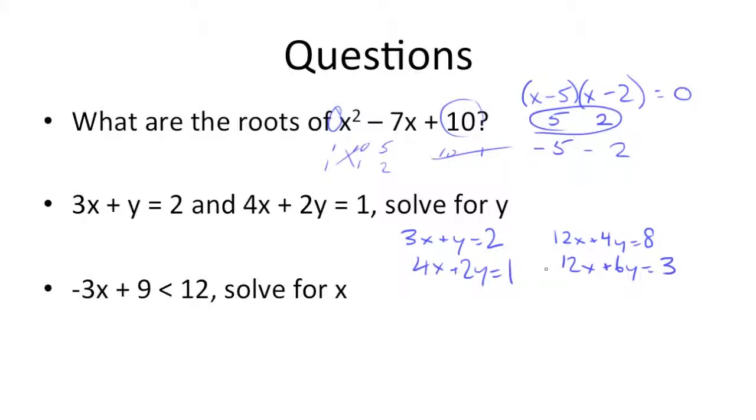Now all we need to do is subtract. So 12 minus 12 is 0, we cancel the x's out. 4y minus 6y is negative 2y, and that's equal to 8 minus 3, which is 5. And we get y is equal to negative 5 over 2.